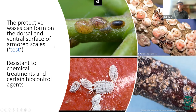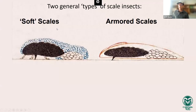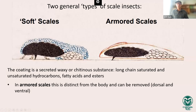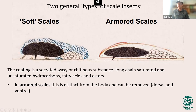These protective waxes in armored scales can form on both the dorsal and ventral surface, making them highly resistant to certain controls. In armored scales, the coating — called the test — is a waxy, chitinous substance made from unsaturated hydrocarbons excreted from secretory glands, covering both dorsal and ventral surfaces as well as all the eggs. This is distinct from the body and can actually be removed. If you can easily remove that waxy substance, you can be fairly certain it's an armored scale.